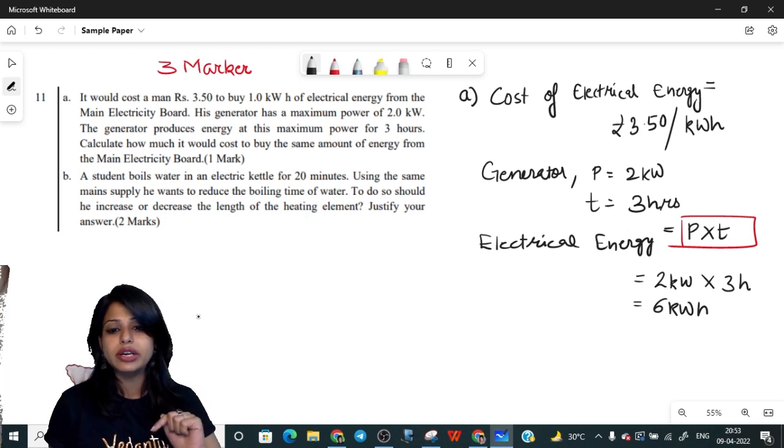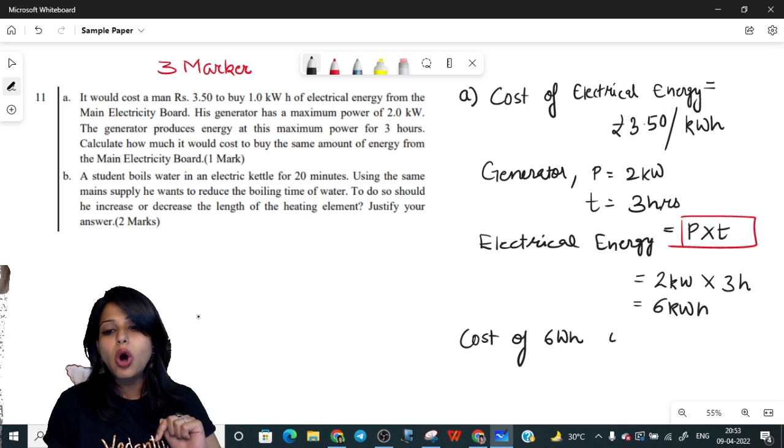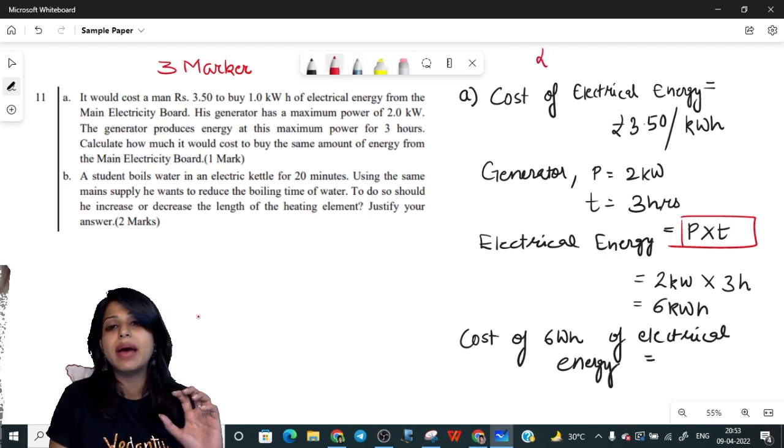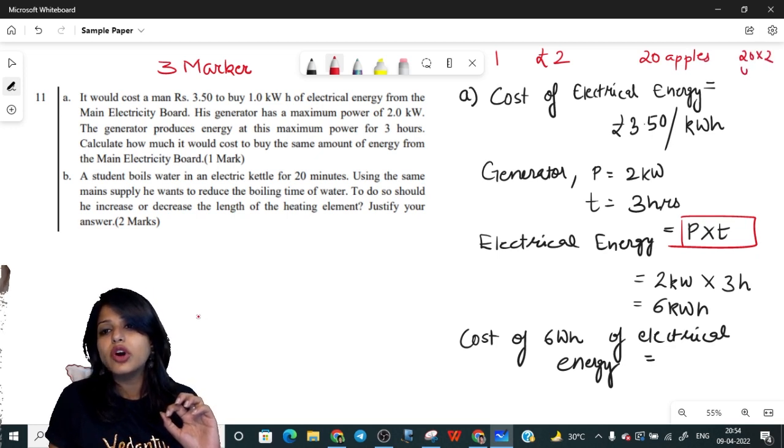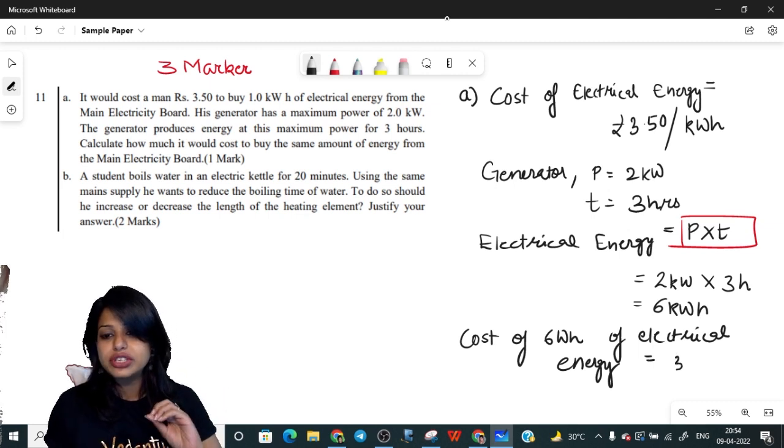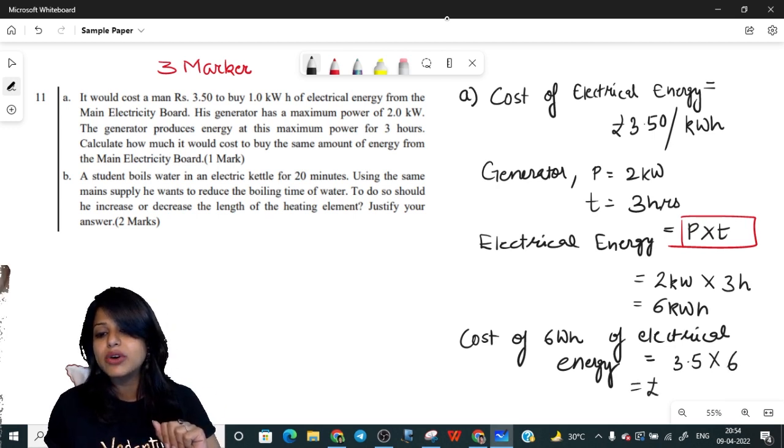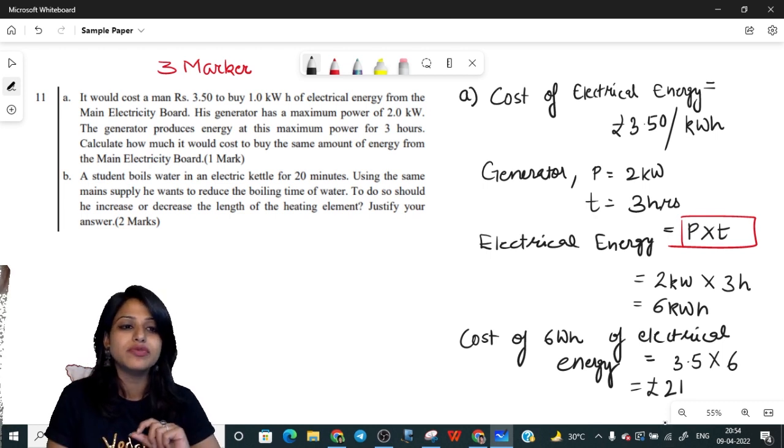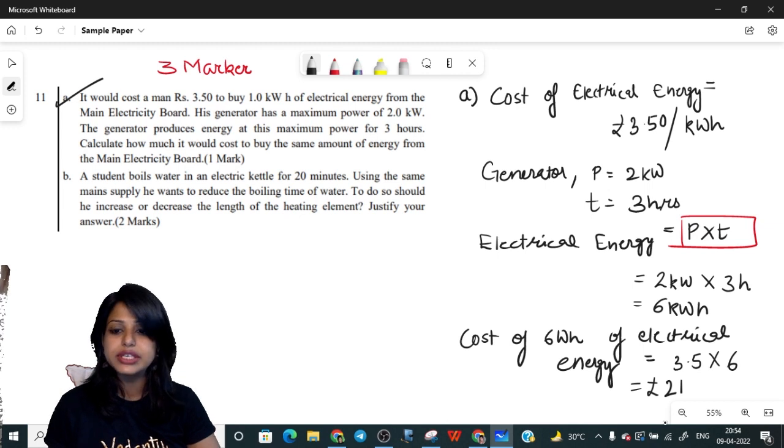The cost of 6 kilowatt hour of electrical energy is simple like a unitary method question - if one apple is 2 rupees, then 20 apples will be 40 rupees. Cost of electrical energy was 3.50 per kilowatt hour times 6, which gives rupees 21. That's your final answer for part A.